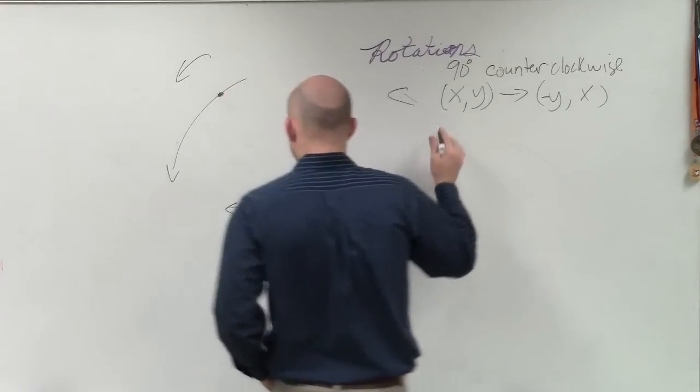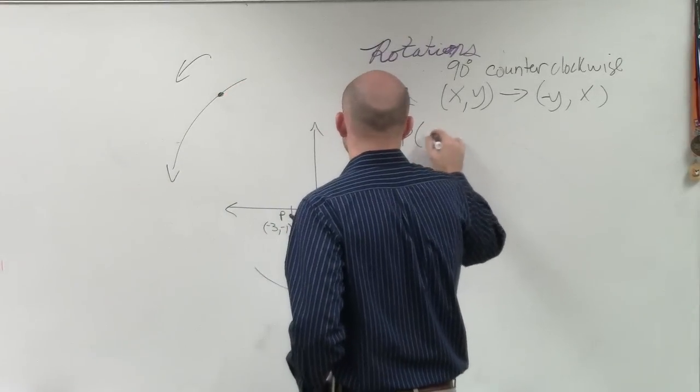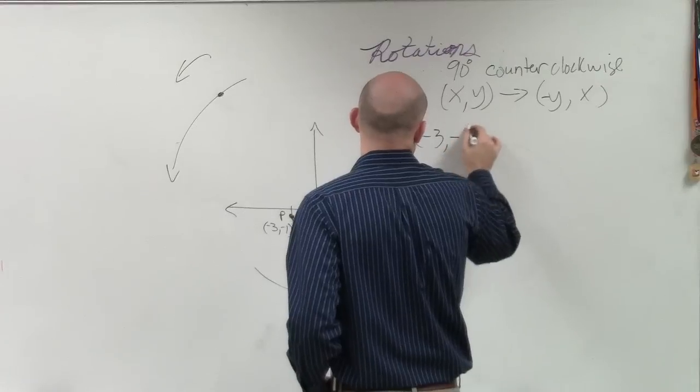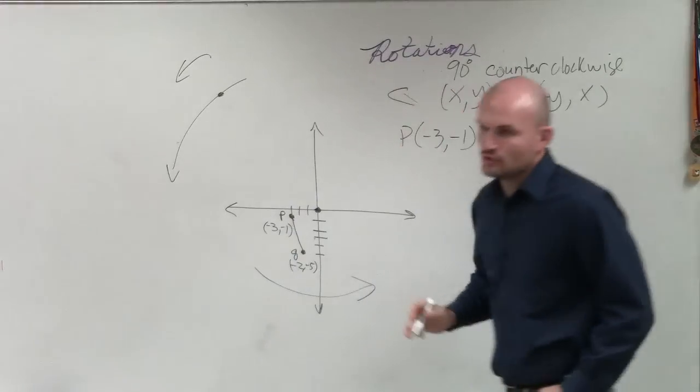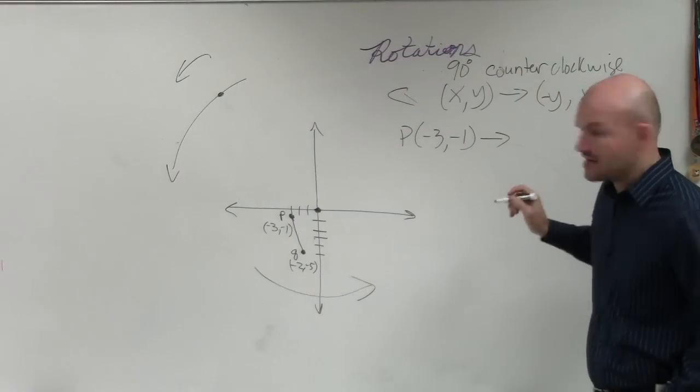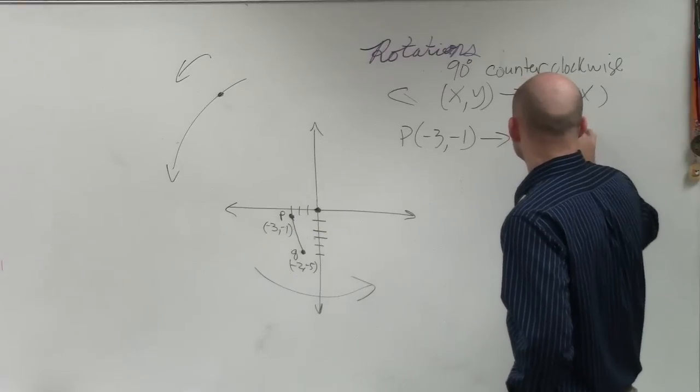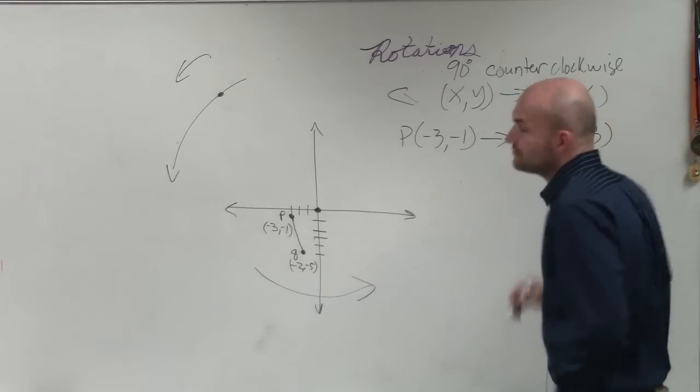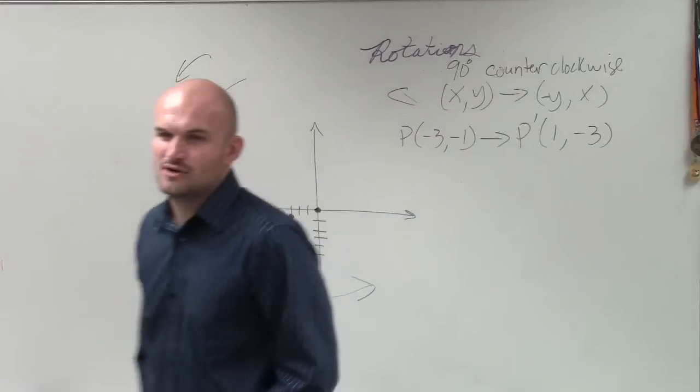So let's look at our points. So we have P. P is at negative 3, negative 1. So if I follow this rule for 90 degrees counterclockwise, I now have P prime is going to be 1, negative 3. Does everybody see that, or have any questions?